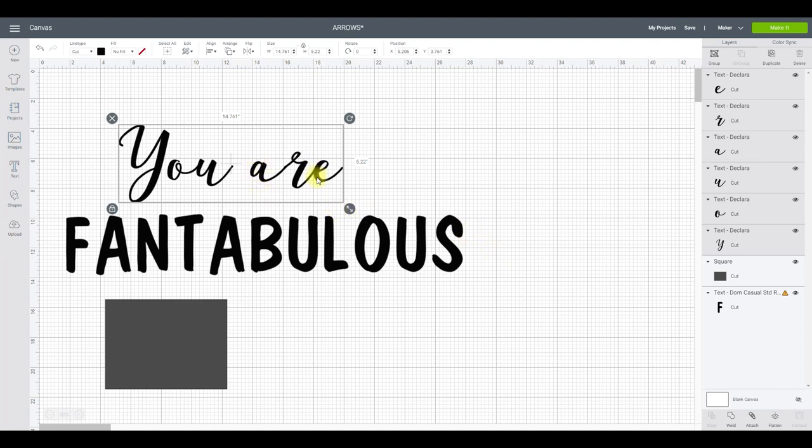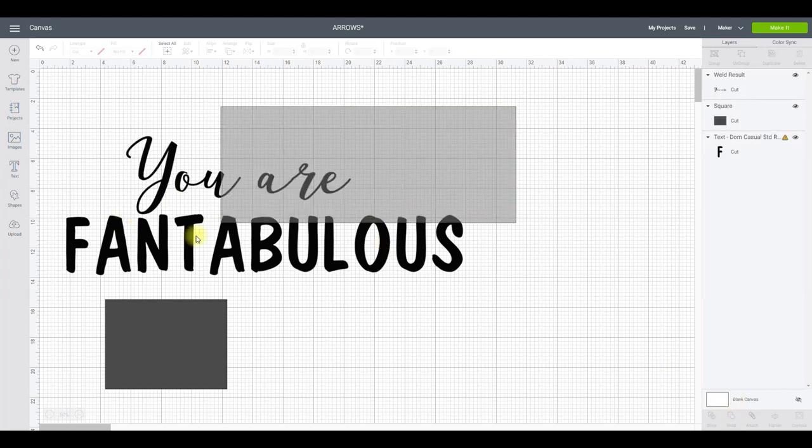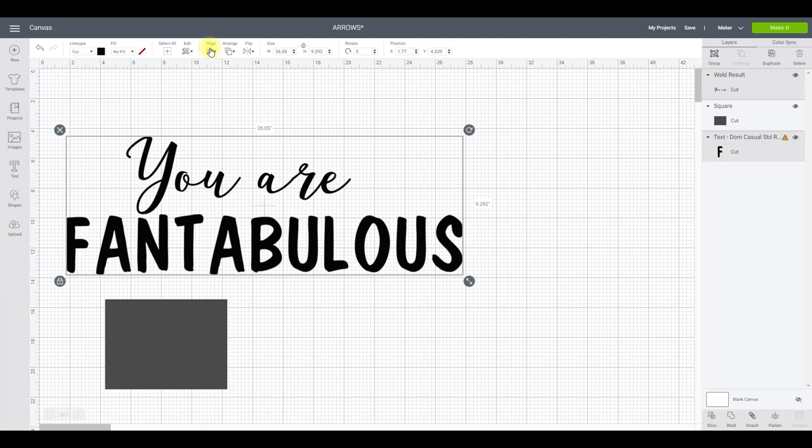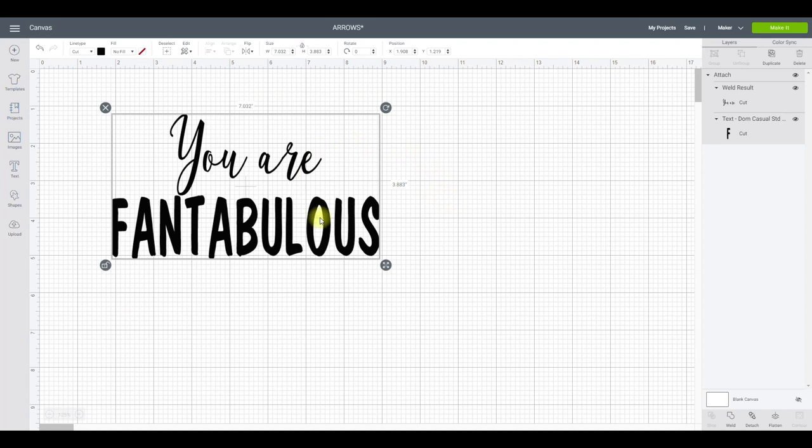I can then weld that line together. And of course, I need to weld because I've ungrouped and then I've overlapped those letters. So if I simply attach, it's going to actually cut out where they overlap. Whereas if I weld it, they become one continuous piece. And then all I'm going to do is highlight both lines, align and center horizontally. So I'm just using this box to size it up as I want it. That's exactly as I want it. And I have attached them together. We can then go to make it.